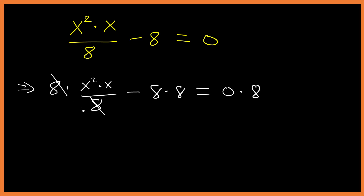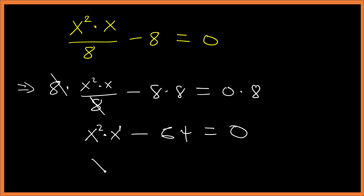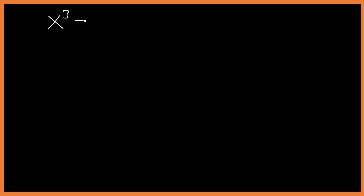The 8s cancel, giving us x squared times x minus 64 equals zero. Since x squared times x has the same base, we add the powers — x to the power 3 — so we have x cubed minus 64 equals zero.